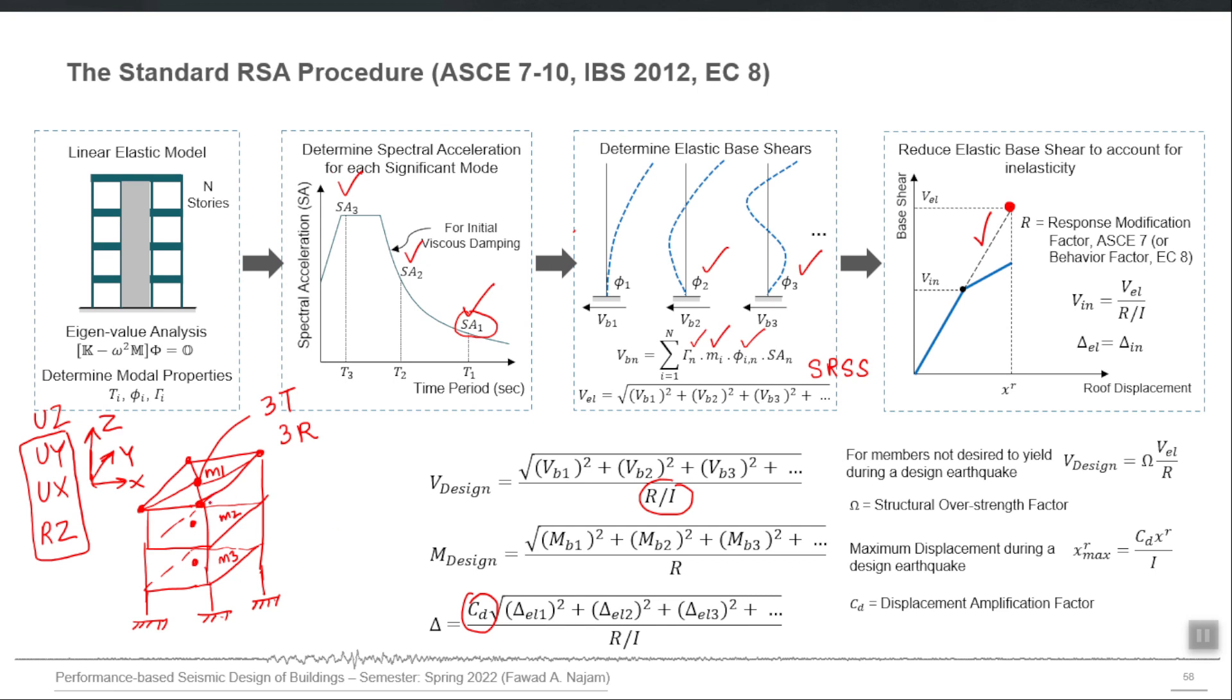So the program in this three-story building in both directions will be able to calculate nine modes. And those nine modes, if the building is perfectly symmetric, there will be three modes in x direction: first, second, third mode in x direction; three modes in y direction corresponding to the three y directional degrees of freedom; and three modes in torsion corresponding to this Rz degree of freedom located at three different levels.